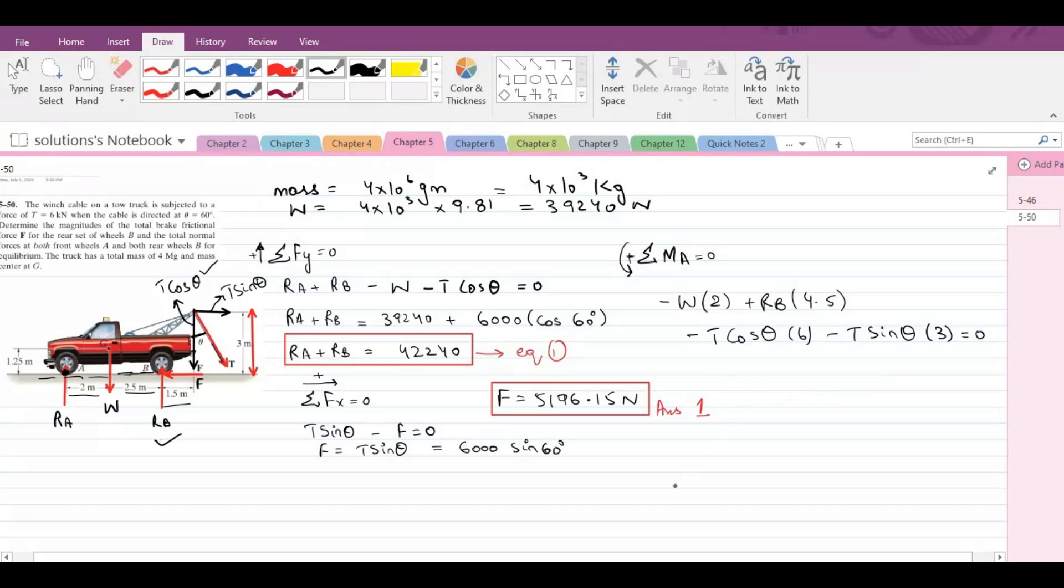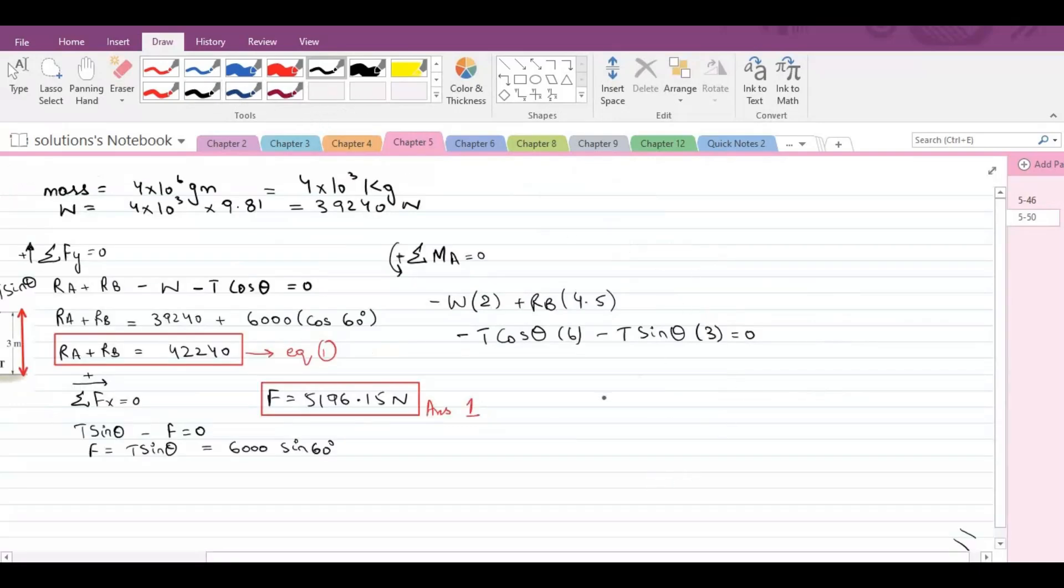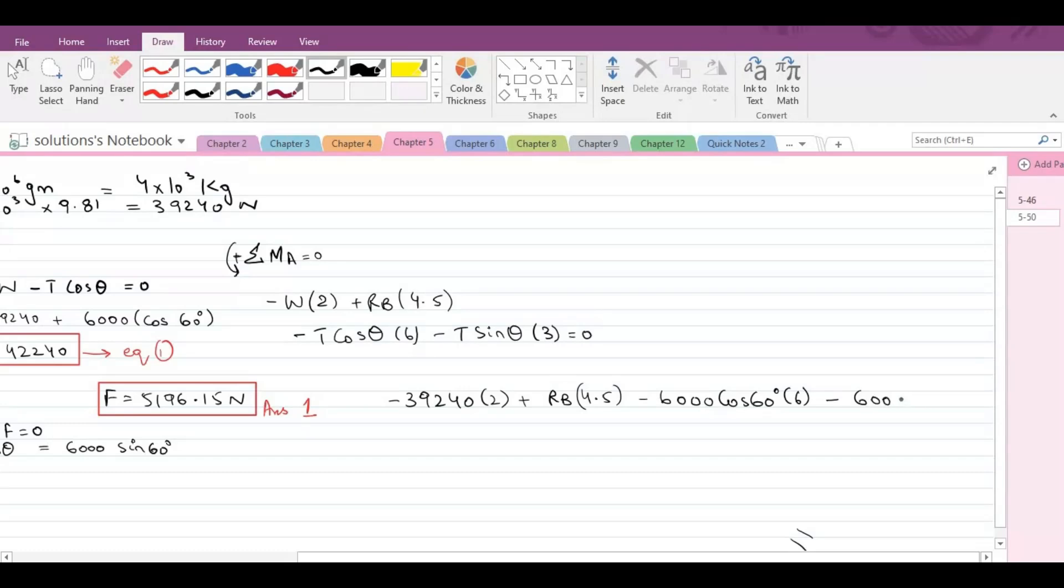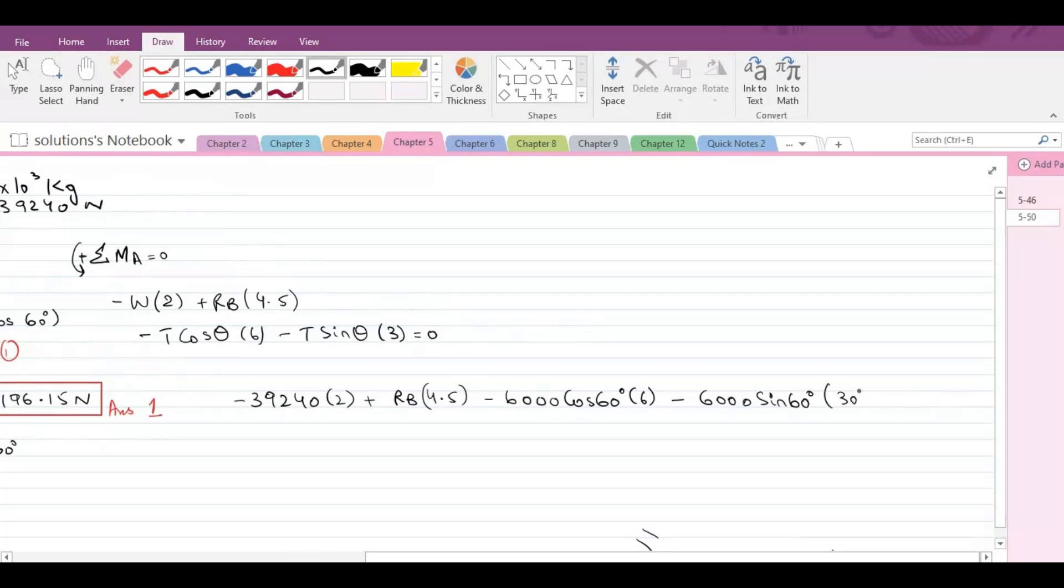Now we have to substitute the values. So the weight force is 39,240 newtons into 2 plus RB 4.5 minus 6000 cos 60 into 6 minus again 6000 sin 60 into 3 equals to 0. Upon simplification, the normal reaction at point B comes out to be 24,904.1 newtons. So this is our second answer.